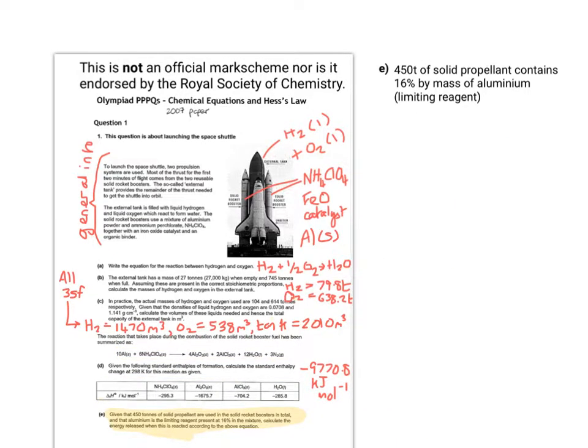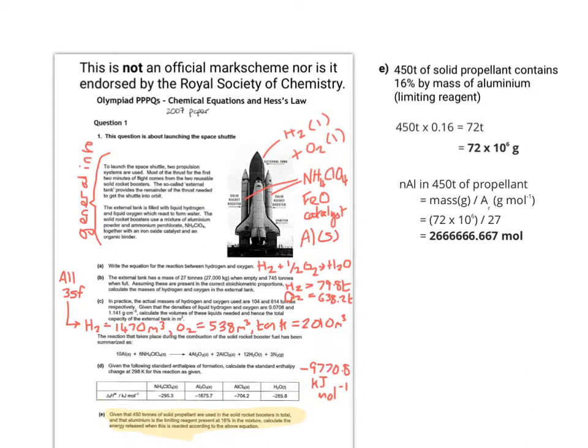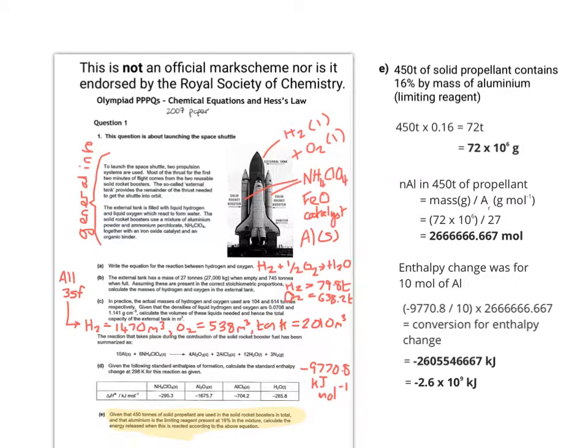Now we can look at the final question. It says 450 tonnes of solid propellant contains 16% by mass of aluminium. We need to work out the mass of aluminium in 450 tonnes. That gives us 72 tonnes, but to work out the moles of aluminium in that amount, we need to convert to grams. That gives us 2666666.67 moles. We have to remember that the enthalpy change was for 10 moles of aluminium. So we do the enthalpy change we worked out, divided by 10, and multiply it up by the amount of moles of aluminium. That gives us 2.6 times 10 to the power of 9 kilojoules, which is the same as 2.6 megajoules.